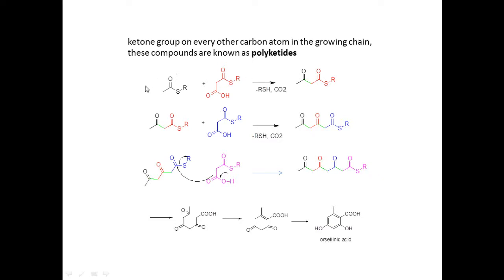Here is an ester condensation similar to the Claisen ester condensation. The difference here is the loss of a CO2 molecule, producing an enolate that attacks the electrophilic carbon, producing a carbon-carbon bond shown by the green line. This gives a keto-ester. Similarly, the enolate attacks the next carbon atom, producing a new molecule — a beta-diketo ester. Then another molecule of malonyl-CoA loses CO2, producing an enolate ion, and a similar attack gives the triketo ester.